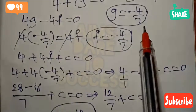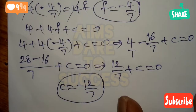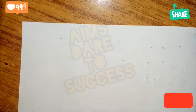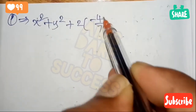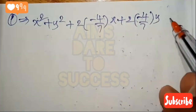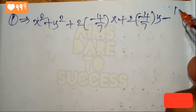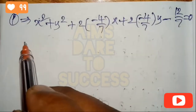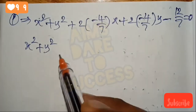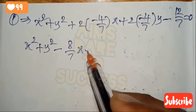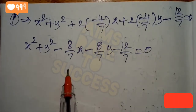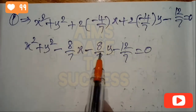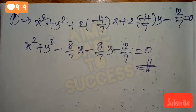Substituting g = -4/7, f = -4/7, and c = -12/7 into the standard equation x² + y² + 2gx + 2fy + c = 0: x² + y² + 2(-4/7)x + 2(-4/7)y + (-12/7) = 0, giving x² + y² - (8/7)x - (8/7)y - 12/7 = 0. Multiplying by 7: 7x² + 7y² - 8x - 8y - 12 = 0. This is the equation of the circle. Thank you, dear students.